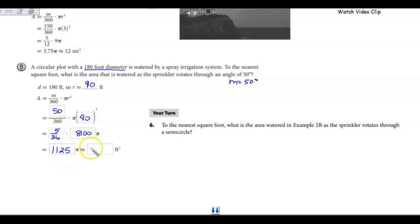It wants it to the nearest square foot, so nearest whole. I get 3,534.29. If I round to the nearest whole, I get 3,534 square feet.